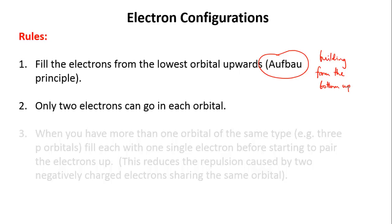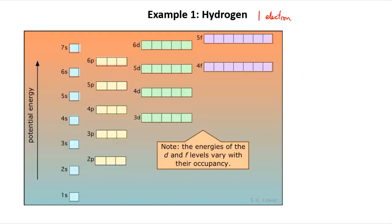Let's try a few examples using these two rules. First let's try hydrogen. This is pretty easy. It's got one electron and we follow the first rule and we put it in the lowest possible orbital which is the 1s orbital. The electron is depicted as an arrow in the orbital.